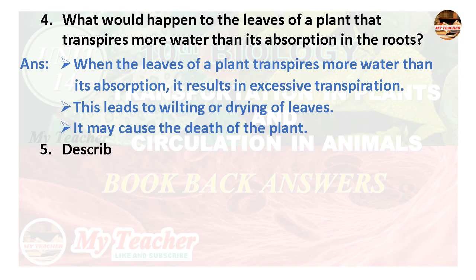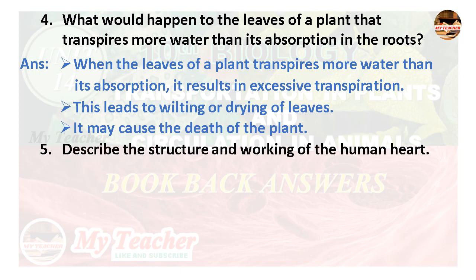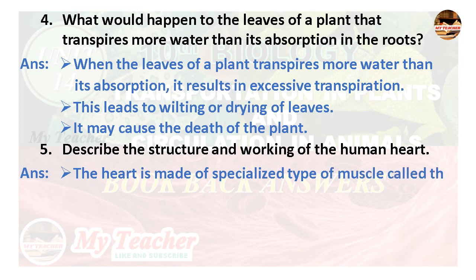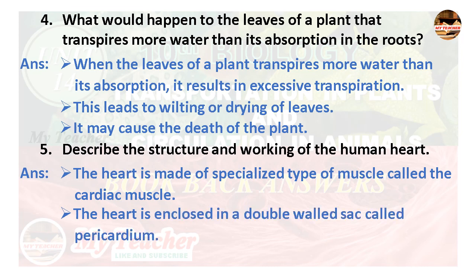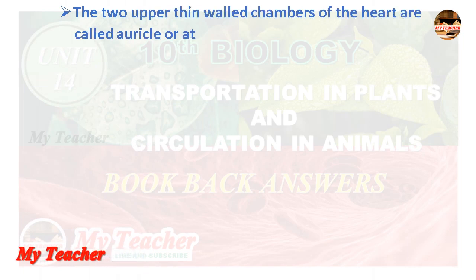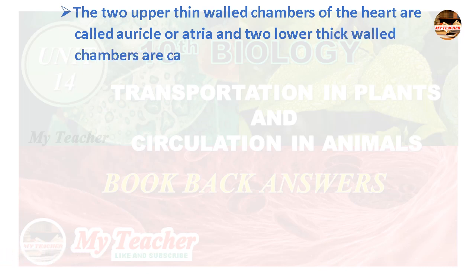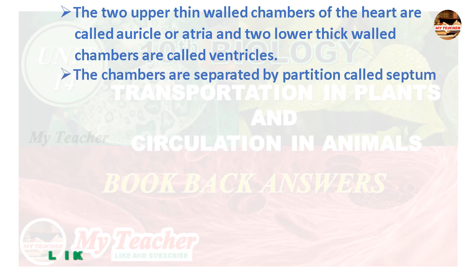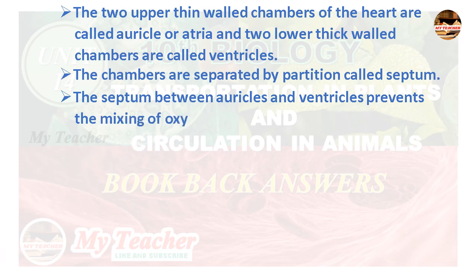Fifth question: Describe the structure and working of the human heart. Answer: The heart is made of specialized cardiac muscle and is enclosed in a double-walled sac called the pericardium. The human heart is four-chambered. The two upper thin-walled chambers are called auricles or atria, and the two lower thick-walled chambers are called ventricles. The chambers are separated by a partition called the septum, which prevents mixing of oxygenated and deoxygenated blood.